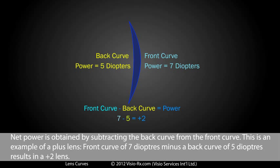This is an example of a plus lens. Front curve of 7 diopters minus a back curve of 5 diopters results in a plus 2 lens.